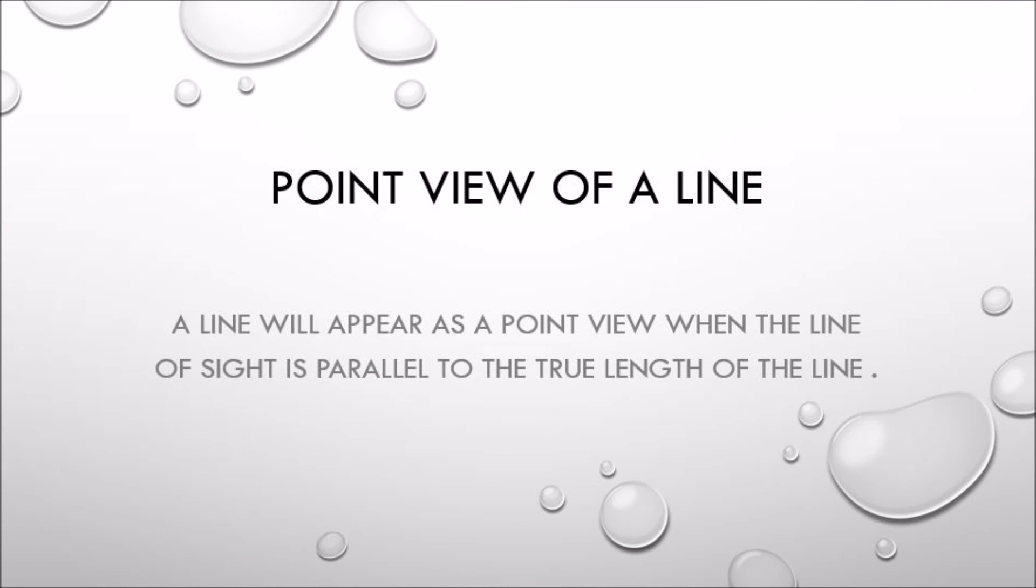A point view of a line occurs when the line of sight is parallel to the true length of the line.